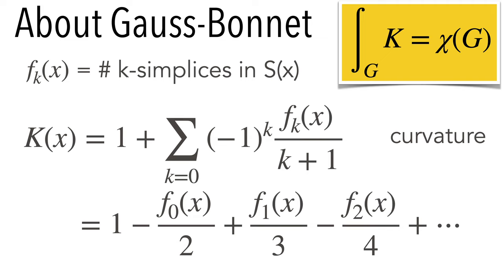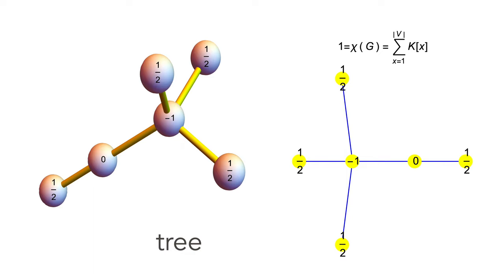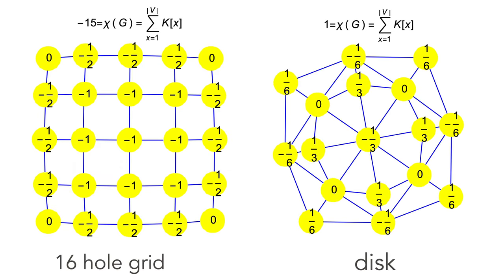About Gauss-Bonnet, we have a curvature given by summing up cardinalities defined by the unit spheres. I have the Euler characteristic, which can be expressed using these numbers. More generally, we can take the simplex generating function of a graph and compute it recursively using the simplex generating function of the unit spheres. Here are some examples. We see a tree with curvatures to the right; the tree always has Euler characteristic one. Another example is a disk, a discrete disk, and we see the curvatures here.